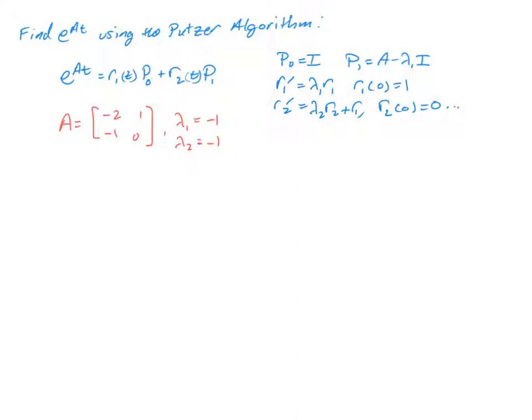So in any of these methods, the first step is to always find the eigenvalues, which we found in the previous problem as negative 1 with multiplicity 2. The next step is to find these ingredients. The first thing you'll notice is that the matrix P0 is always equal to the identity matrix. So P0 is always equal to I, and for 2 by 2, that's 1, 0, 0, 1.